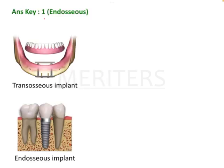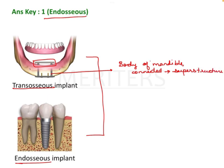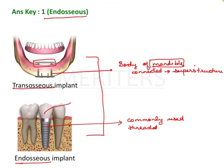The answer is endosseous implant. Now, the difference between an endosseous and a transosseous implant: a transosseous implant has a connected plate that goes to the body of the mandible, welded or connected together with a bar which is the superstructure. It was commonly indicated only for the mandibular arch. This was an older design and is no longer used. Endosseous implants, on the other hand, are the commonly used implants currently — they are threaded and support the prosthesis.